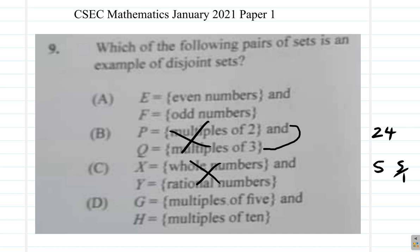Multiples of 5 and multiples of 10. A multiple of 5 is 50. 50 is also a multiple of 10, so this is not disjoint. So let's look at A: even numbers and odd numbers.